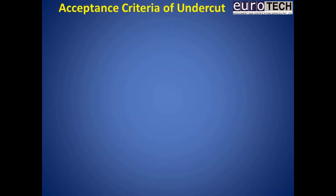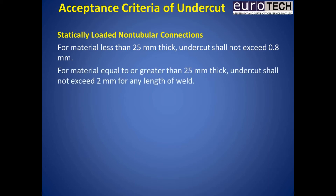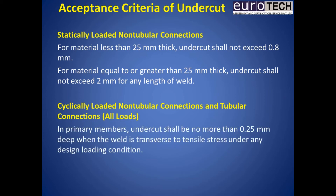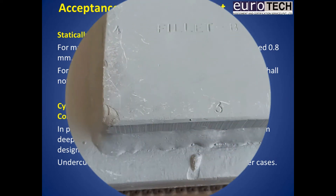Let us watch the acceptance criteria of the undercut. Firstly, for statically loaded non-tubular connections: for material less than 25 mm thick, undercut shall not exceed 0.8 mm; for material equal to or greater than 25 mm thick, undercut shall not exceed 2 mm for any length of weld. Secondly, for cyclically loaded non-tubular connections and tubular connections, all loads: in primary members, the undercut shall be no more than 0.25 mm deep when the weld is transverse to tensile stress under any design loading condition. Undercut shall be no more than 0.8 mm deep for all other cases.